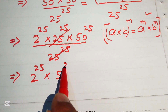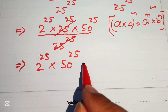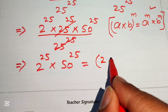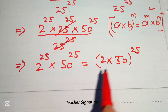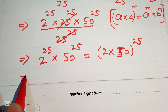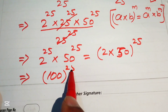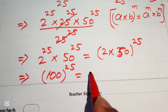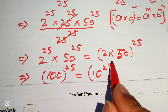We see that the exponents on both remaining terms are the same, so we combine the bases and write it as (2 times 50) to the power of 25. Multiplying 2 times 50 gives 100, so we have 100 to the power of 25. We then rewrite 100 as 10 squared, giving us (10 squared) to the power of 25.